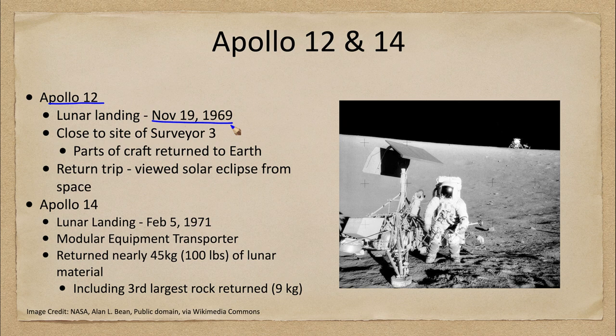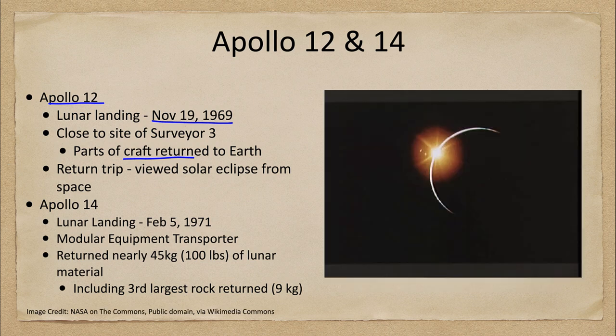Why would we want to do this? First of all, it shows how accurately we can put something down on the surface of the moon — putting it exactly where we want it, not miles away so that the astronauts would be unable to travel there, but close enough that the astronauts could easily walk and bring back parts of the craft and return those to Earth.